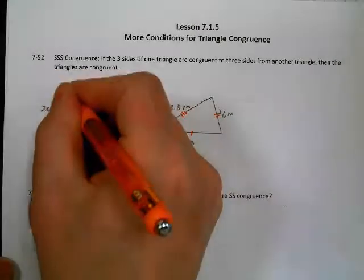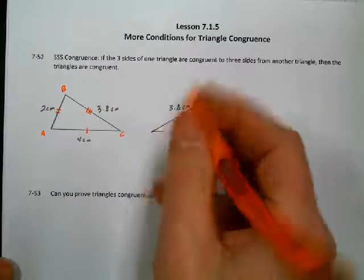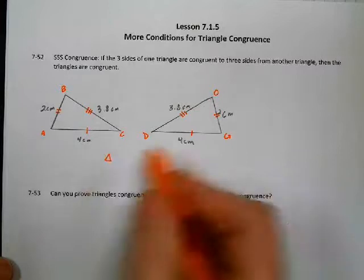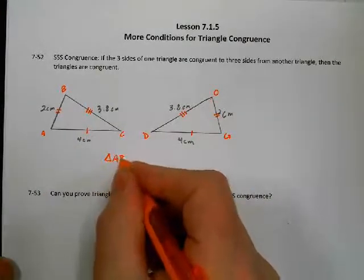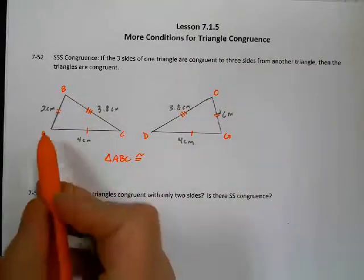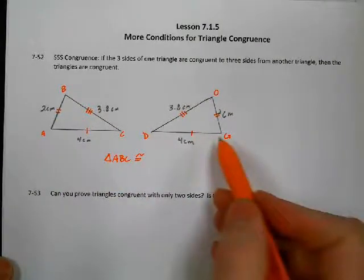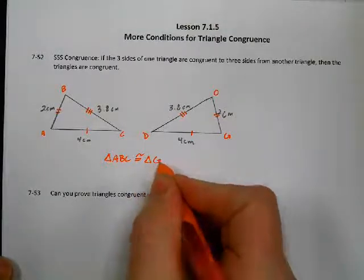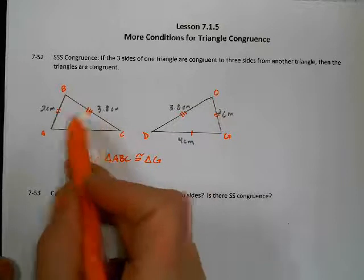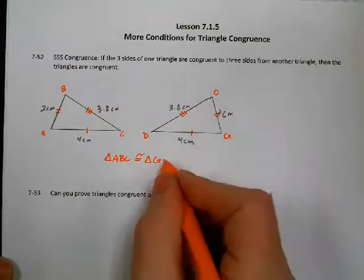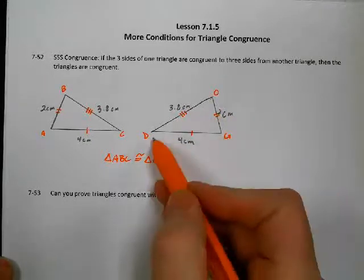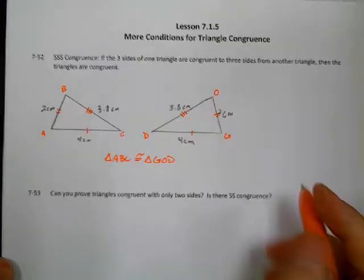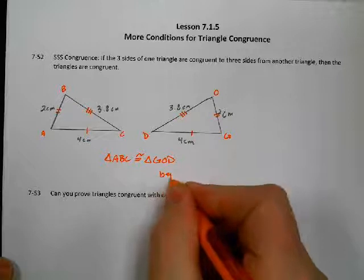Let's do a congruence statement. If this triangle is ABC and this one is DOG, we would say triangle ABC is congruent to triangle... A is between the 1 and 2 tick marks, and G is between the 1 and 2 tick marks. B was between 2 and 3, and O is between 2 and 3. C is between 1 and 3, and D is between 1 and 3. So this would be by Side-Side-Side congruence.